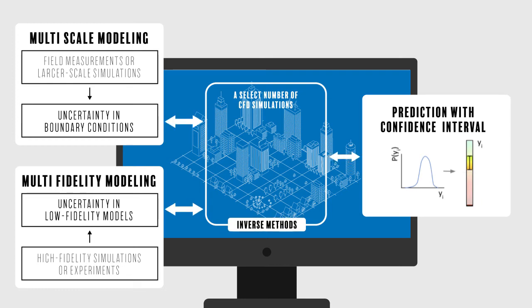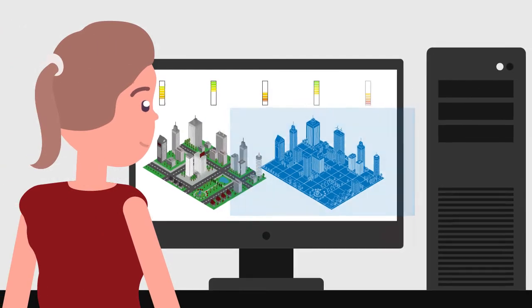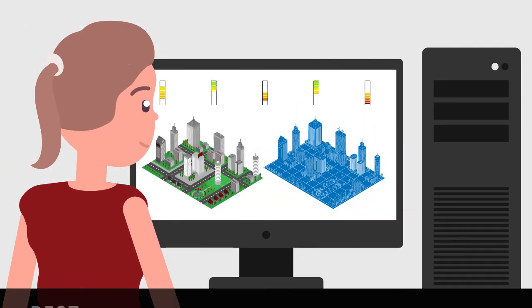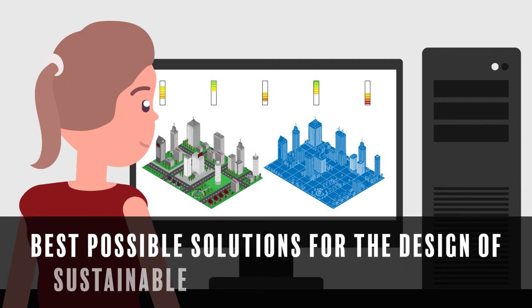And inverse methods to increase the accuracy of the results by informing our models with data from sensor networks. The resulting computational tools will enable designers and engineers to select the best possible solutions for the design of sustainable buildings and urban areas.